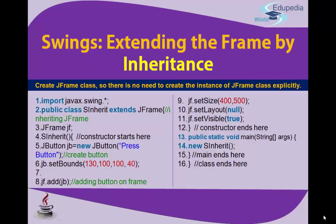Line 7: jf.add(jb). jf is the JFrame reference, dot is the operator calling the inner function add, and within add you are passing jb, which is the object name of the JButton. This places jb onto the jf canvas — the JFrame. The comment says 'adding button on frame'.